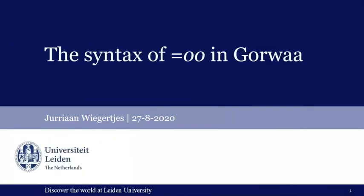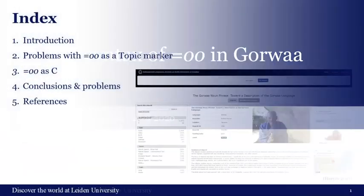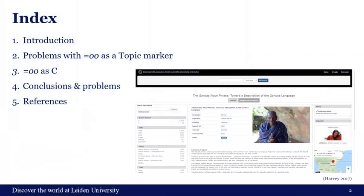I'm going to talk about the syntax of 'o' in Gorwa. First I will give some introduction, then I will treat some problems I have with the current analysis of the marker as a topic marker. Then I will present an alternative analysis where I treat 'o' as a C marker, and lastly I will draw some conclusions and touch upon some problems with my analysis.